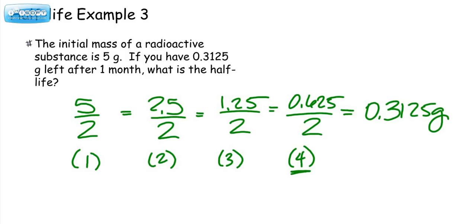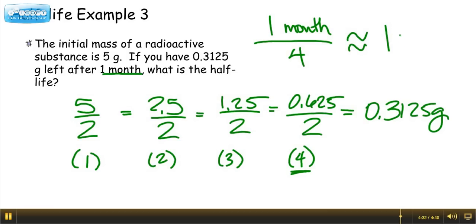So if it took 1 month for this to happen, then we had 4 half-lives in 1 month. So it would be 1 month divided by 4. So it would be roughly 1 week.